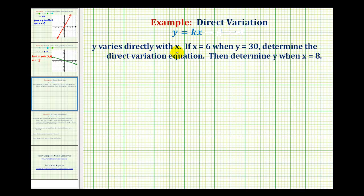We're given that y varies directly with x, and if x equals 6 when y equals 30, we want to determine the direct variation equation and then determine y when x equals 8.